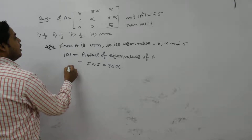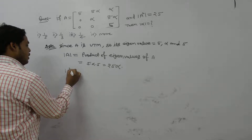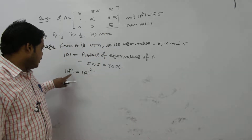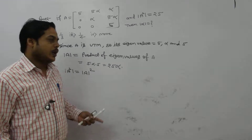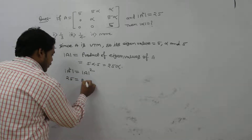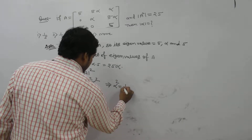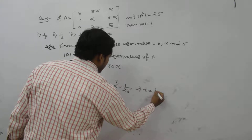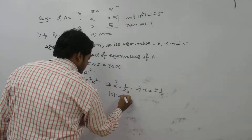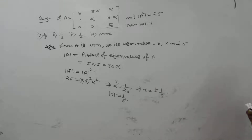It is given that the determinant of A squared equals 25. By the property of determinants, one can write det(A²) = det(A)², so det(A)² = 25. Since det(A) = 25 alpha, we get (25 alpha)² = 25, which gives 625 alpha squared = 25, so alpha squared = 1/25, which implies alpha = ±1/5. Our aim is to find mod of alpha, so mod alpha = 1/5. Option number one is the correct answer.